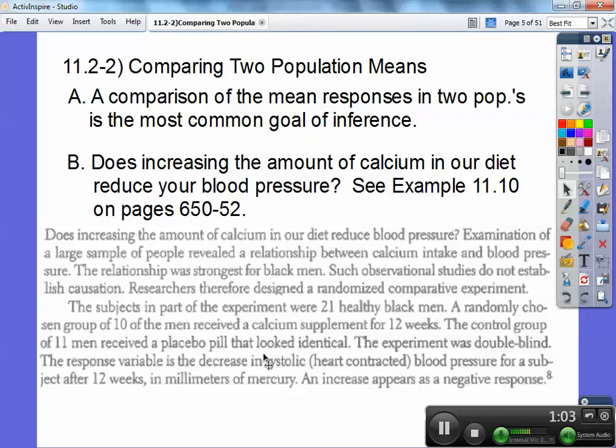The other 11 received a placebo pill that looked identical. The experiment was double blind, and so you need to know what double blind means. It means nobody knew who got what pill. The people who were giving it to them and the people who were taking it didn't know.